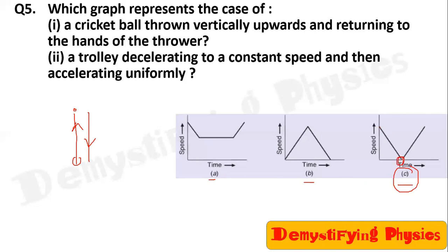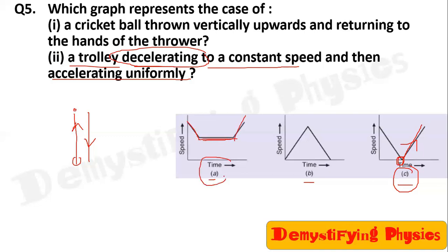The answer is graph C: uniform retardation going up, speed becomes zero at the highest point, then speed increases uniformly as the ball returns to the ground. The second part: a trolley decelerating to a constant speed and then accelerating uniformly — the graph would slope downward, then stay flat for constant speed, and then slope upward for uniform acceleration.